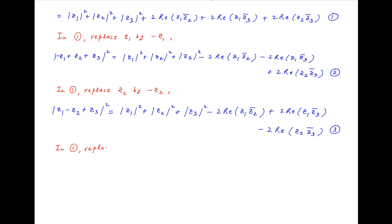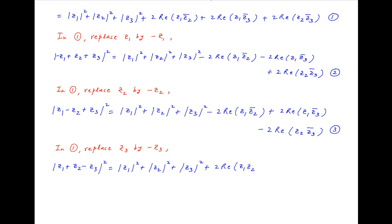Again, in result 1, replace z3 with minus z3. We get the square of the absolute value of z1 plus z2 minus z3 equals the square of the absolute value of z1 plus the square of the absolute value of z2 plus the square of the absolute value of z3, plus two times the real part of z1 times the conjugate of z2, minus two times the real part of z1 times the conjugate of z3, minus two times the real part of z2 times the conjugate of z3. Let's call this result 4.